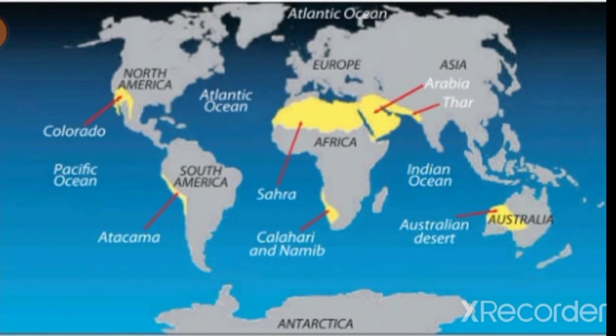Globally, there are two kinds of deserts. These are tropical deserts and temperate deserts.